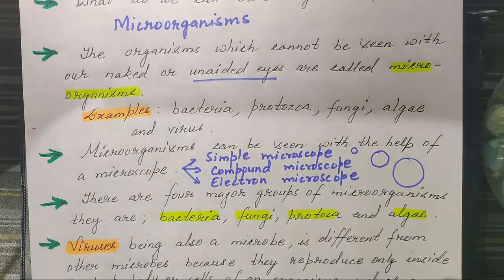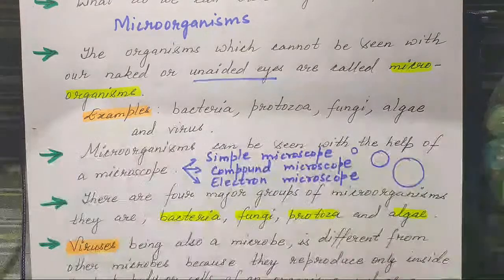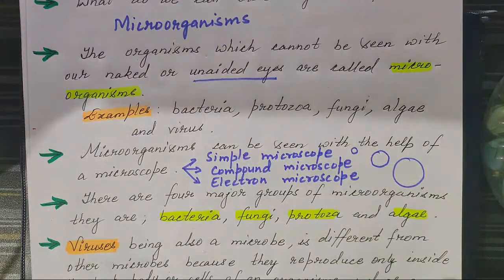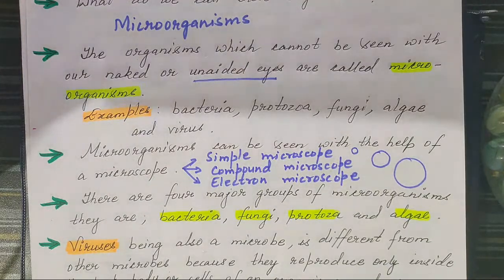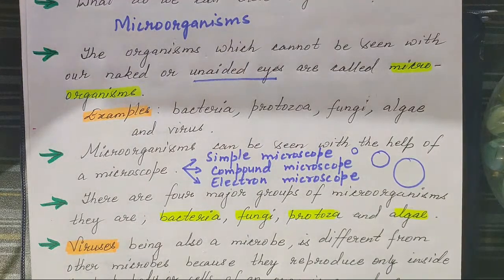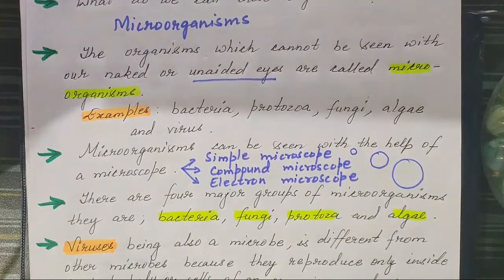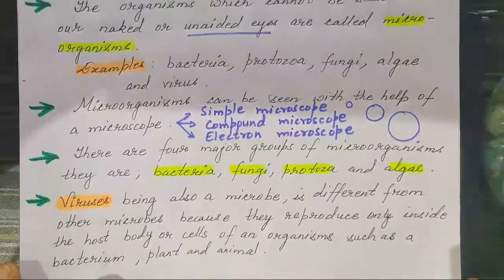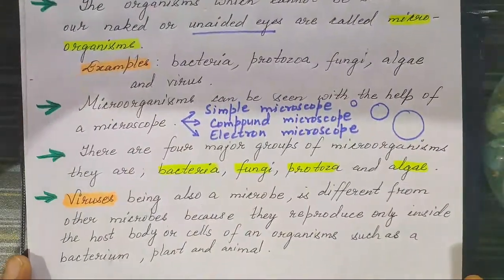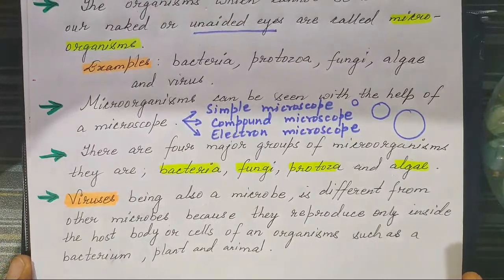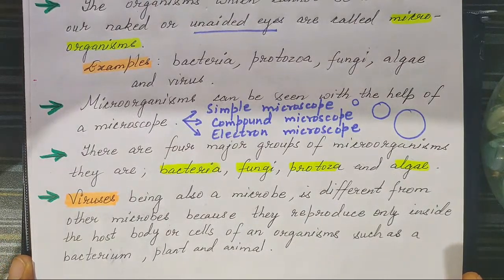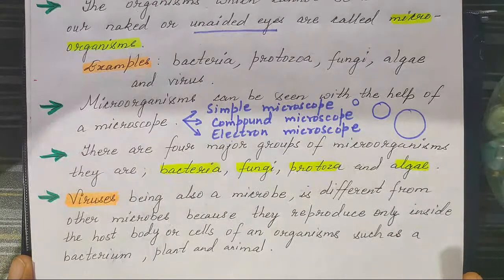There are four major groups of microorganisms. They are bacteria, fungi, protozoa, and algae.